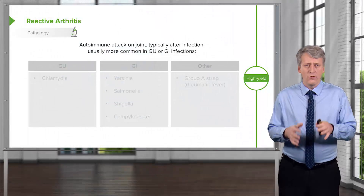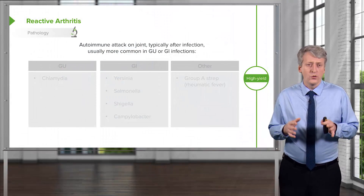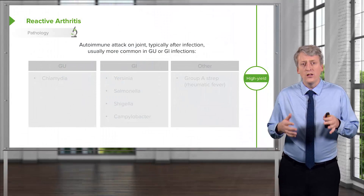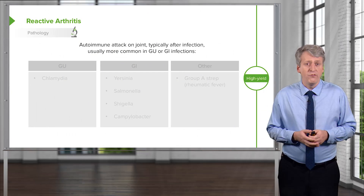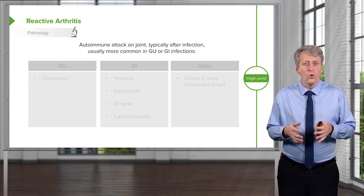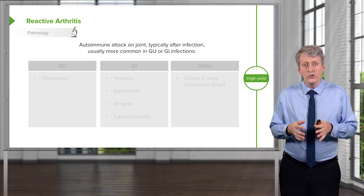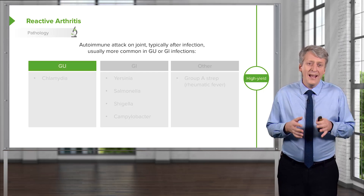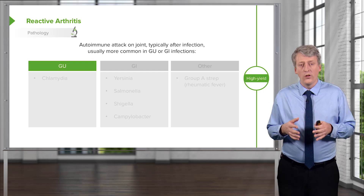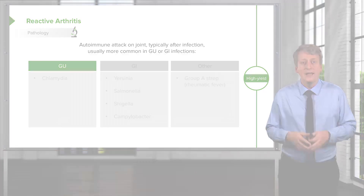Reactive arthritis, at one point also called Reiter's syndrome, is an autoimmune attack on a joint, typically after an infection, and usually it's more common in GU or GI infections. The classic GU infection that can result in reactive arthritis is chlamydia. In adolescents with chlamydia, they can, after the infection starts, later develop an autoimmune attack on their joints.